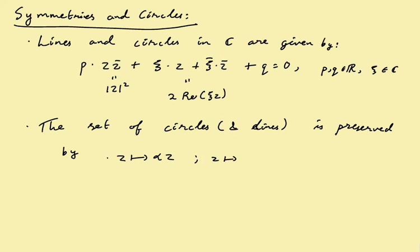Also z goes to z plus beta and most interestingly z goes to 1 over z. So even this preserves it because you see these two terms get flipped in that case. When z goes to 1 over z, the q term and the p term kind of get flipped when you clean out the equation. By the way, these equations may give you empty sets and so on, so I'm not saying this always gives you a non-empty circle, but you'll get all these circles and it's easy to see what happens there.